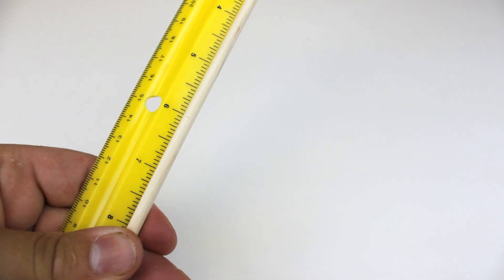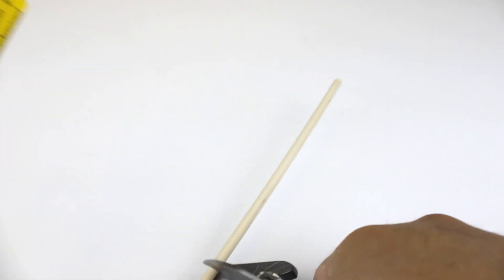The first step is to take a dowel, cut it at 6 inches, so then you'll have two dowels that are both 6 inches long.